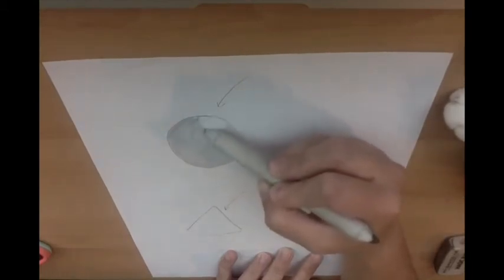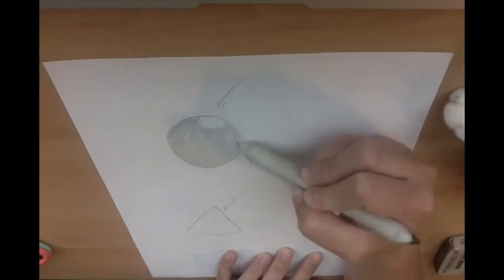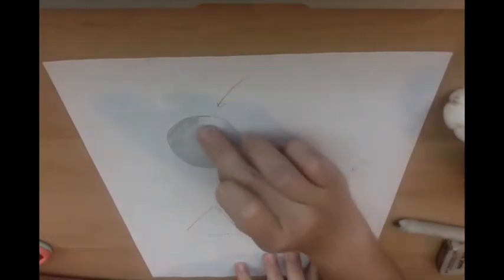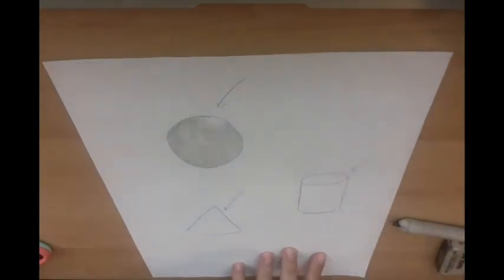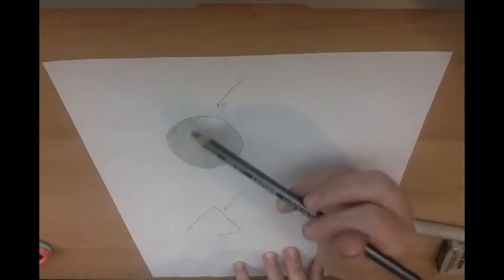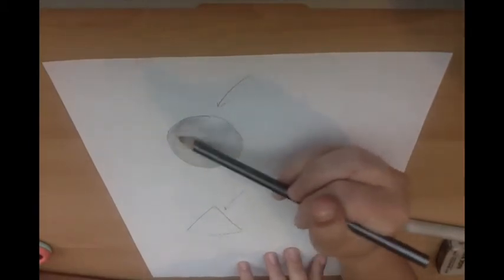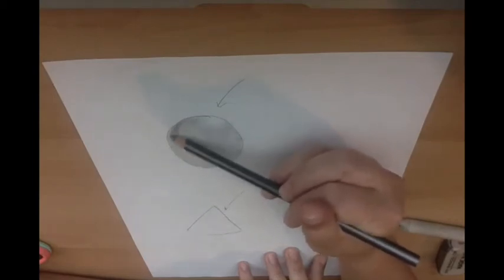So next I'm going to put a shadow area, which is the darker values. And so it'll kind of start making your sphere start to kind of come to life. Now I'm doing two different levels of shadow area, kind of a medium color and then a very, very dark color.